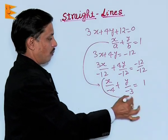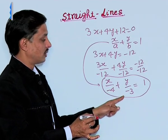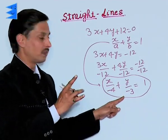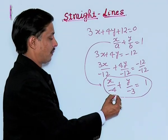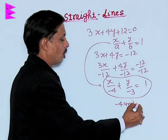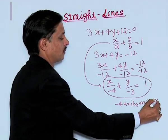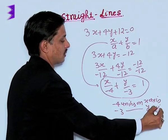I can say this is the equation of that straight line which is cutting off an intercept of minus 4 units on the x-axis and minus 3 units on the y-axis.